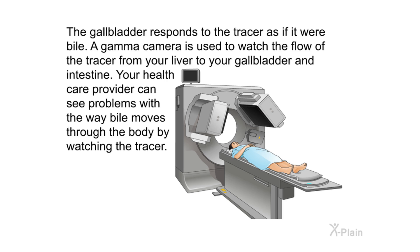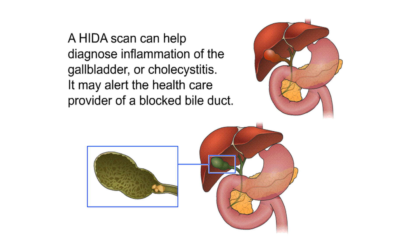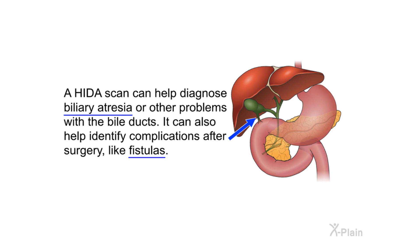A gamma camera is used to watch the flow of the tracer from your liver to your gallbladder and intestine. Your health care provider can see problems with the way bile moves through the body by watching the tracer. A HIDA scan can help diagnose inflammation of the gallbladder, or cholecystitis. It may also alert the health care provider of a blocked bile duct.